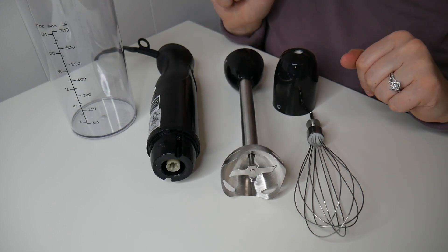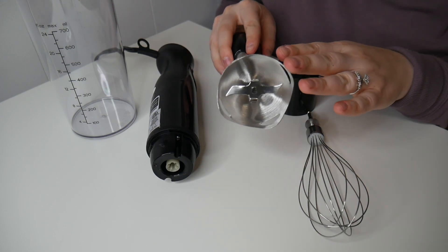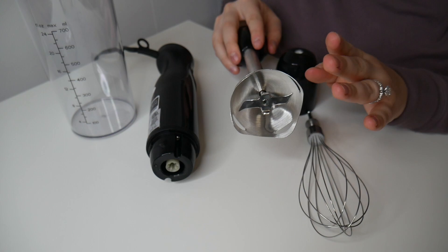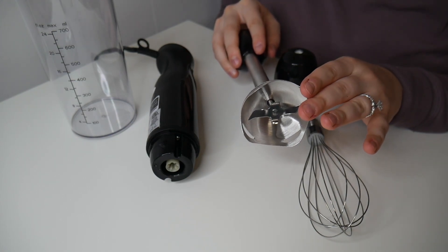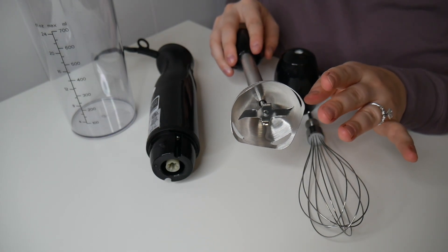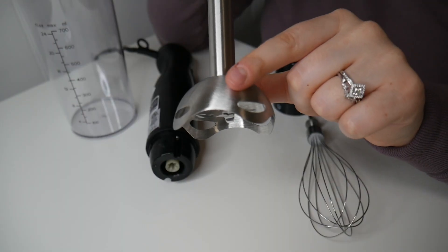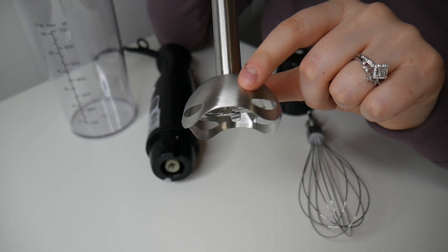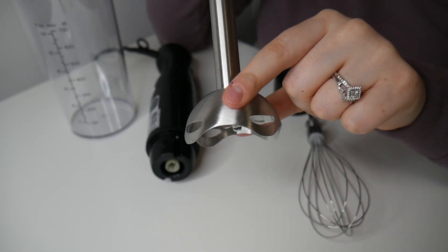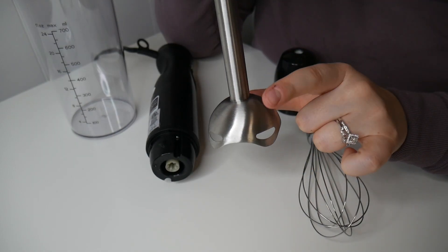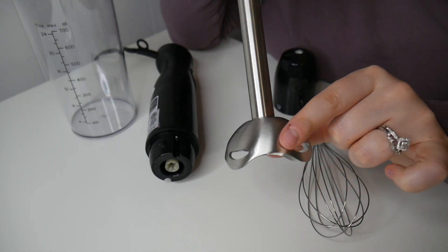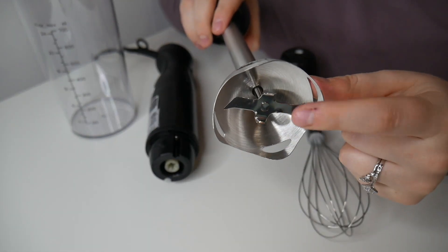The stainless steel blade on the immersion blender head will help effectively blend ingredients for smoothies, baby food, sauces, or soups. One of the really cool features about this stainless steel head is it has this splash-proof guard, so when you are mixing ingredients they won't splash up and make a large mess. I really like how this blade is covered by this splash-proof guard.